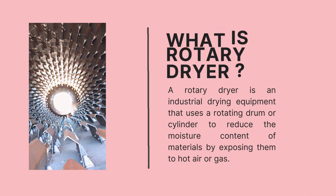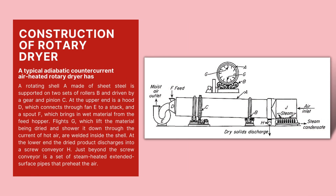Now we'll be looking into the construction of the rotary dryer. The rotary dryer is an adiabatic air-heated dryer. A typical rotary dryer is shown in the figure displayed on the screen. A rotating shell (A), which is made up of steel, is supported by two sets of rollers denoted by B in the figure. The rollers are driven by gears and pinions, marked by C in the figure.